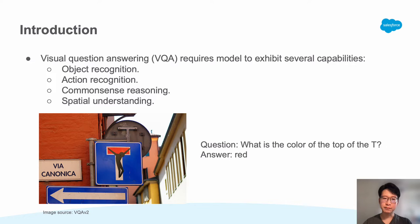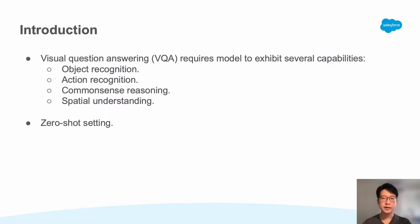In another example, the model requires partial understanding to identify the object, recognize the character 'T' and its color attribute, in order to generate 'red' as the answer. It is especially challenging in zero-shot settings where the model needs to solve VQA without being trained on any VQA data.